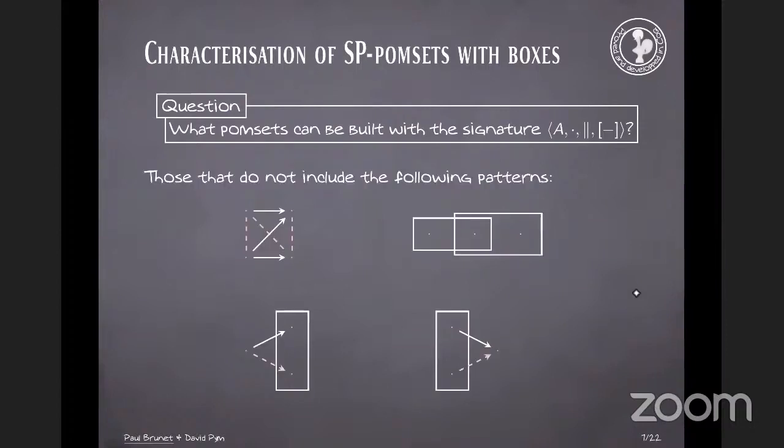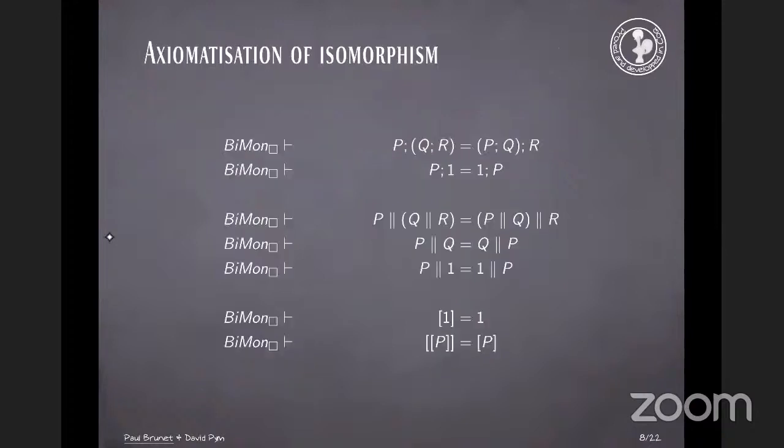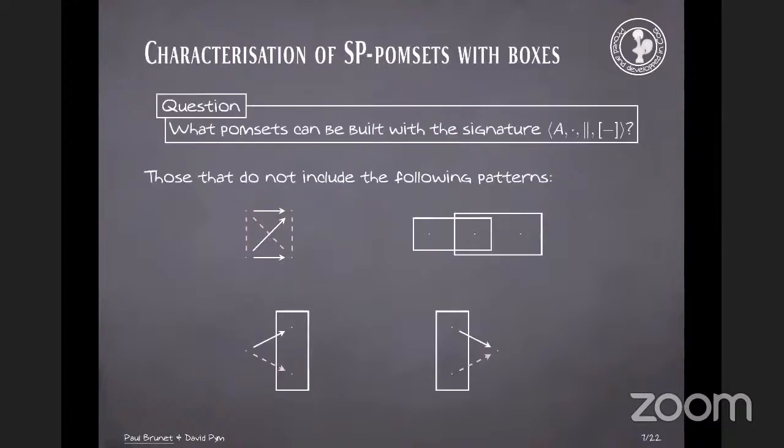The first pattern is the excluded pattern of series parallel Pomsets, so without the boxing operation. And the last three correspond to things about boxes. One of them says that boxes do not overlap non-trivially. And the last two say that basically the contents of a box are indistinguishable from outside of the box. So an event that is outside of a box is either smaller than everybody inside, bigger than everybody inside, incomparable with everybody inside. But it cannot pick and choose which event is going to be smaller, which event is going to be bigger, etc.